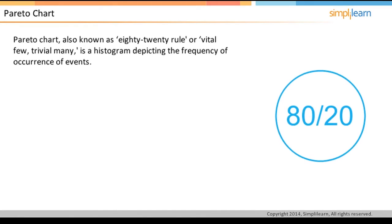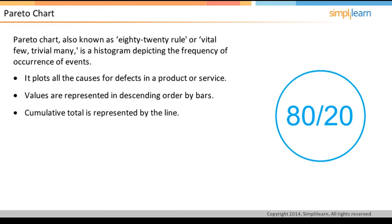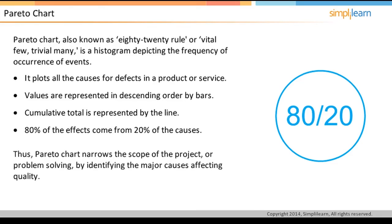A Pareto Chart is a histogram ordered by the frequency of occurrence of events. It is also known as the 80-20 rule, or Vital Few, Trivial Many. It helps project teams focus on the issues which cause the highest number of defects or complaints. The given chart plots all the causes for defects in a product or service. The values are represented in descending order by bars, and the cumulative total is represented by the line. Pareto Chart emphasizes that 80% of the effects come from 20% of the causes, narrowing the scope of the project by identifying the major causes affecting quality.